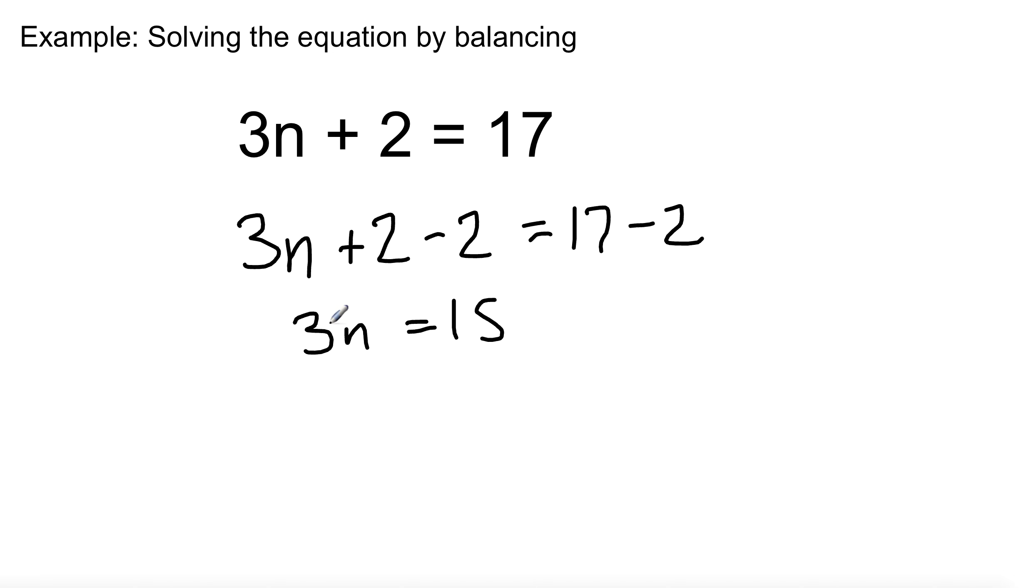Alright. How am I going to get rid of this? How am I going to get rid of the 3? I'm going to divide it by itself. And you know what you do to one side, you do it to the other. So, 3 divided by 3 is 1. So the next line will be 1n, or just n. 15 divided by 3 is 5. n is 5.